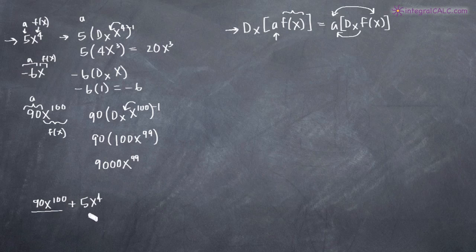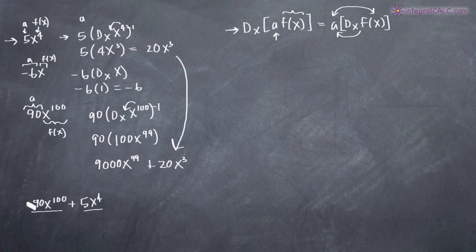Take the derivative of this first term and then the derivative of the second term and just add them together. So you would end up with, if we bring our answer down here, you would end up with 9,000x^99 plus 20x^3 and that would be your final answer for this problem.